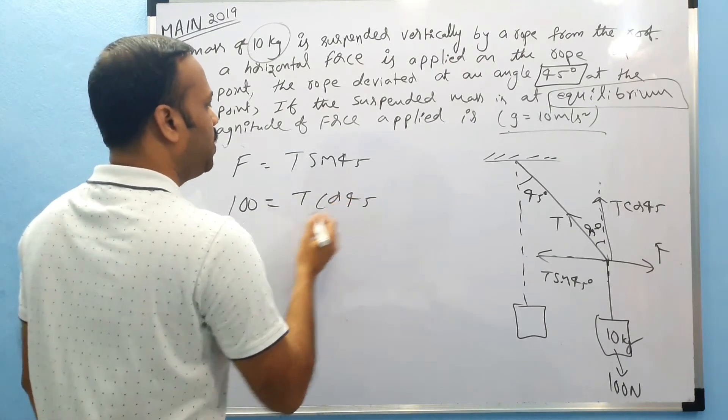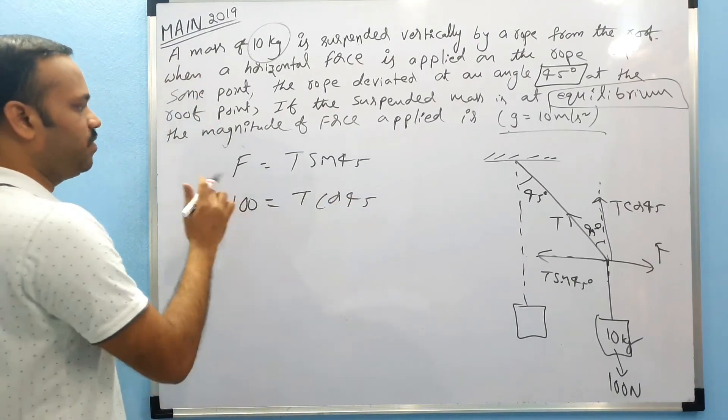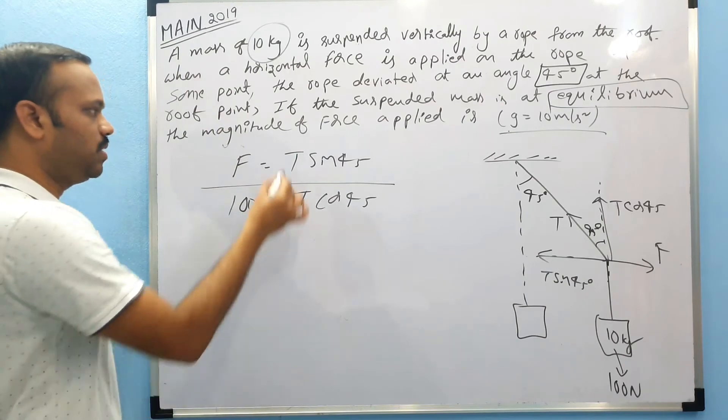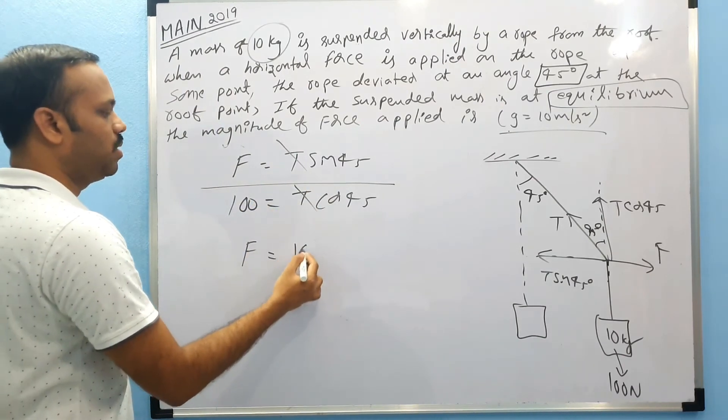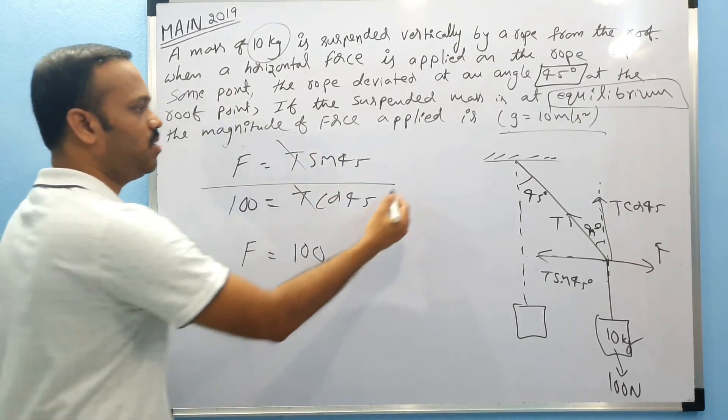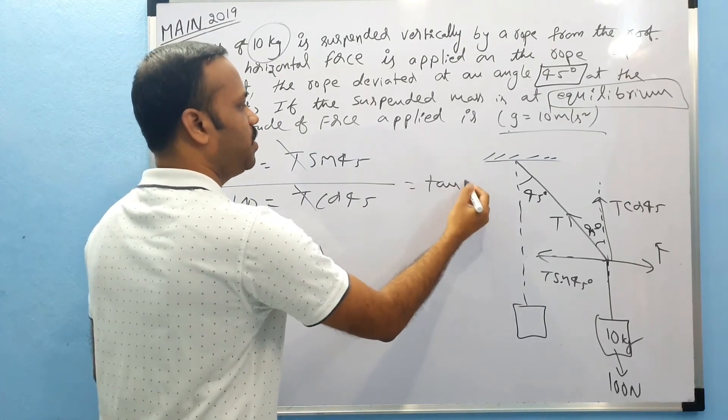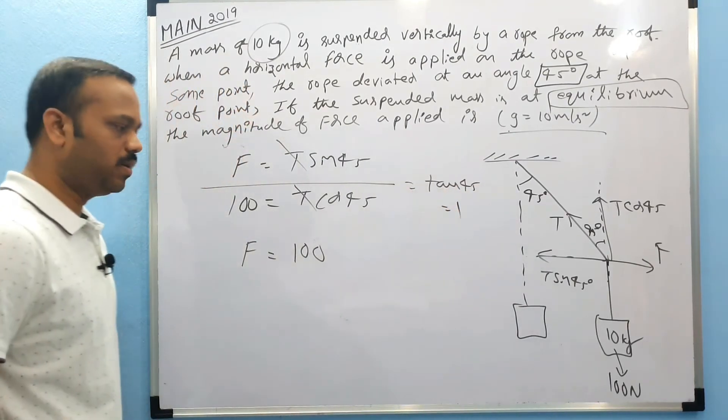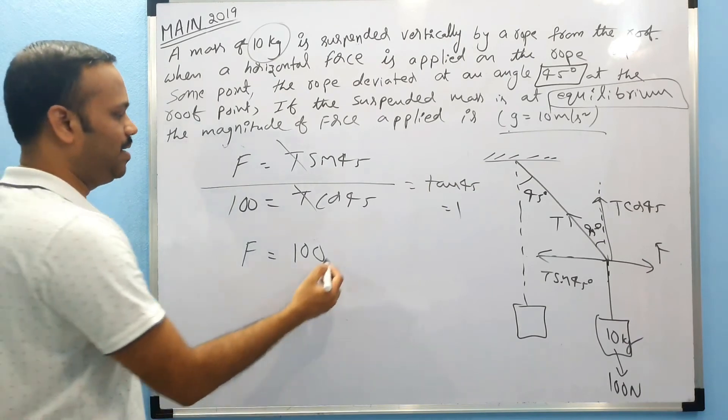We don't know what is T and we want F, so let's divide these two equations. Then T will be cancelled. F equals hundred because sine 45 by cos 45 is tan 45, and tan 45 is one. So F equals hundred newtons.